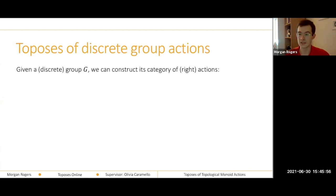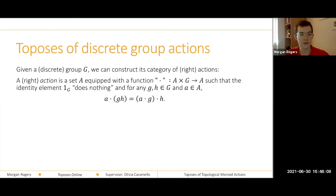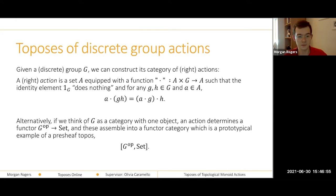First I'm going to tell you about toposes of group actions, starting with discrete groups. If I have a discrete group G, I can consider actions of that group on sets. Classically, we think of an action as an operation from the product of a set A with G to A, respecting the group operations. A nice alternative way is to think of them as presheaves: we think of G as a category with a single object, and then an action — specifically a right action — determines a contravariant functor from G into sets. Because groups are self-dual, it doesn't matter whether we treat this as a functor defined on G or G-op.